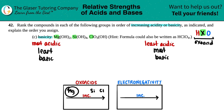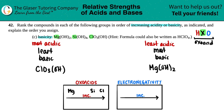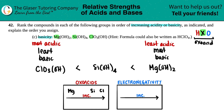The least acidic is magnesium and the most acidic is chlorine. So Mg(OH)₂ is the least acidic, ClO₃OH is the most acidic, and Si(OH)₄ is in the middle. In terms of basicity — from least basic to most basic — we have: ClO₃OH < Si(OH)₄ < Mg(OH)₂. That is the final answer.